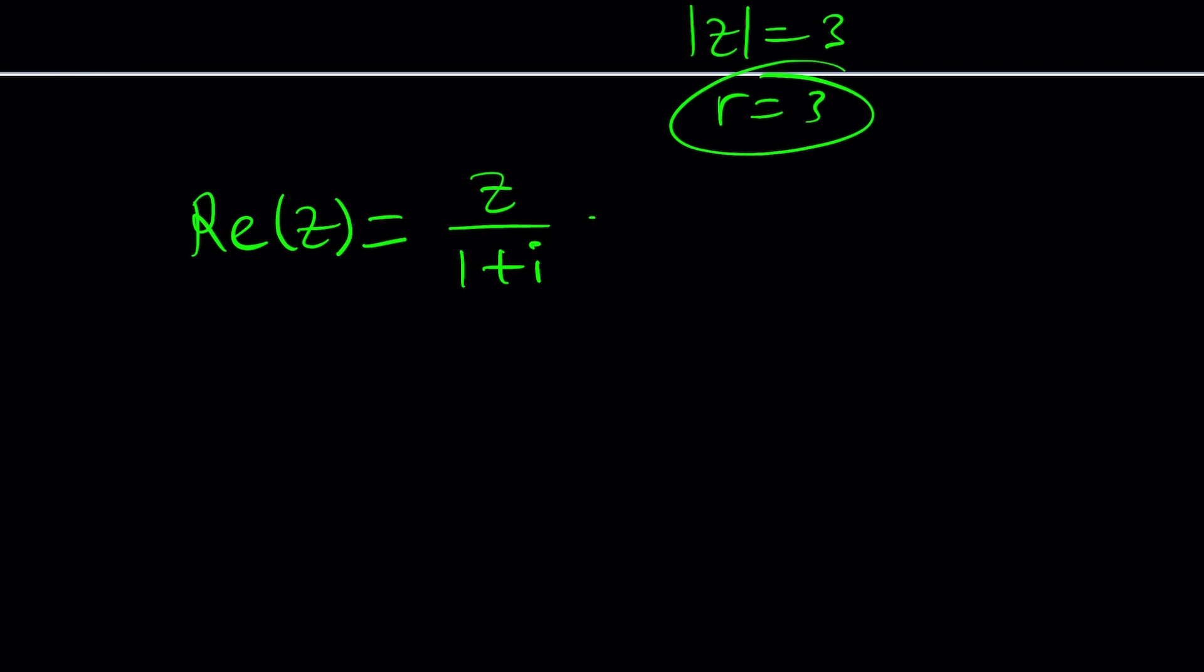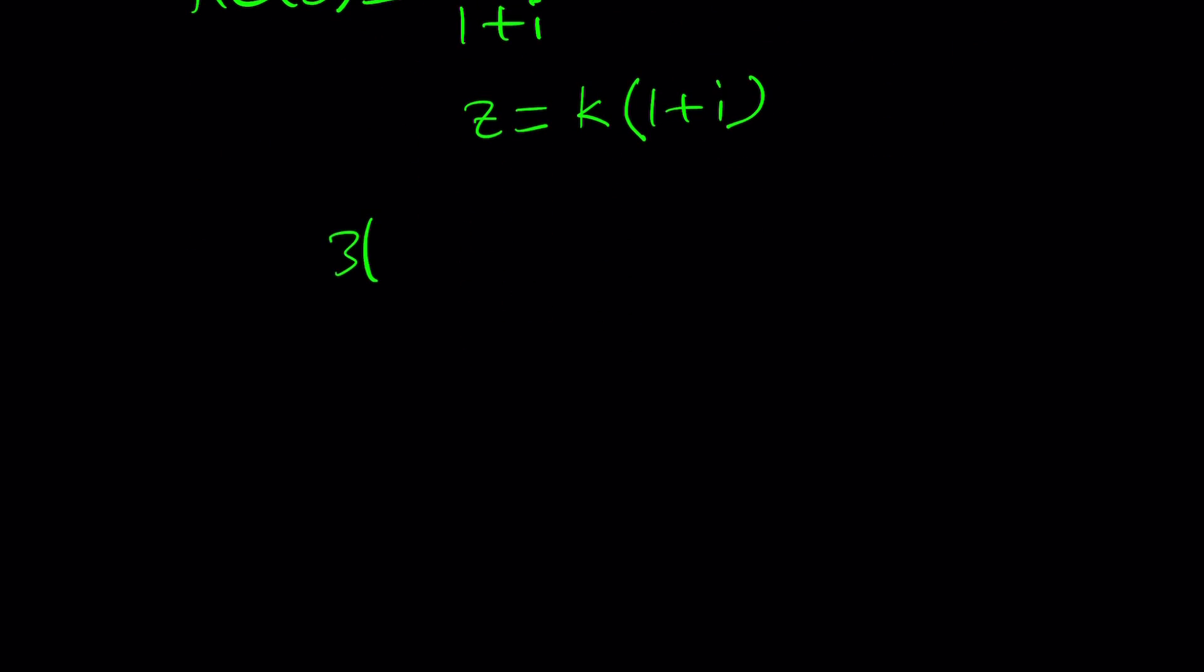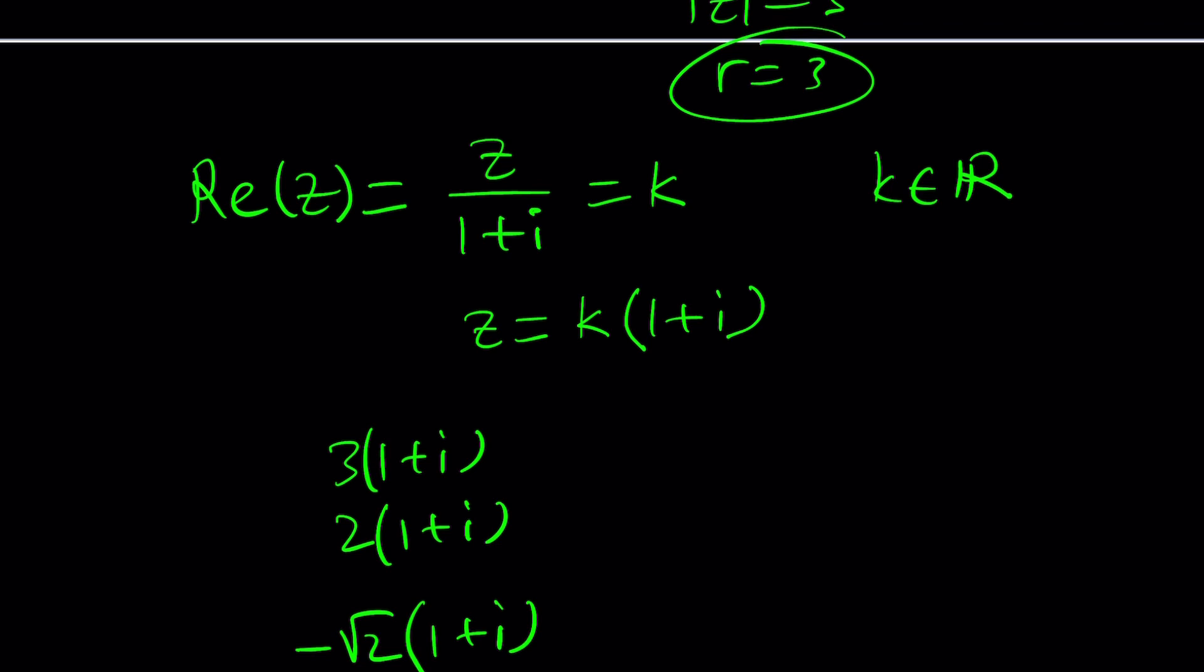So we kind of have a complex number such that when we divide it by 1 plus i, we get the real part. It just means that z divided by 1 plus i is real. Can you believe that? Great. So you can go ahead and call that k. k is real, by the way. You can also call this something else, but I wanted to use k because I want to talk about something. And then when you do the cross multiplication, you basically get z equals k times 1 plus i. It means if you're looking for z, it's actually going to be a real multiple of 1 plus i. But how do you know which k value is going to work? That is a million dollar question.